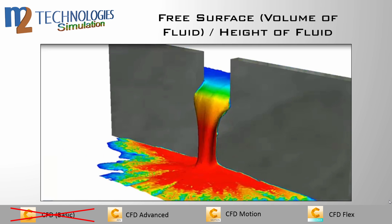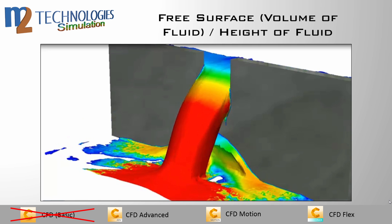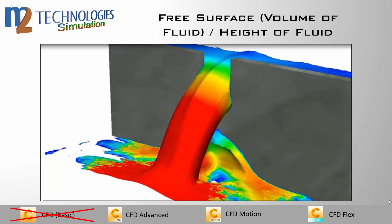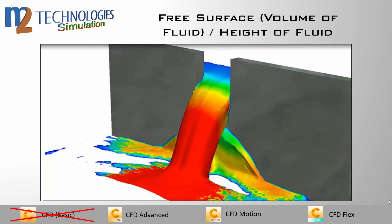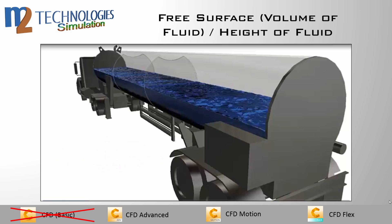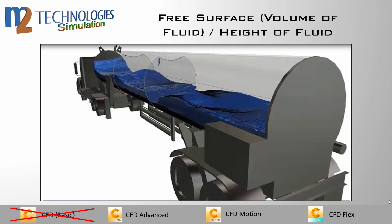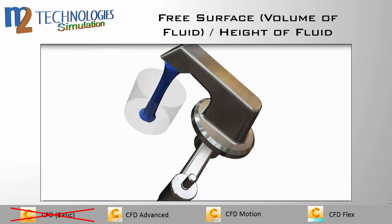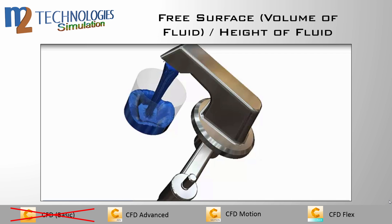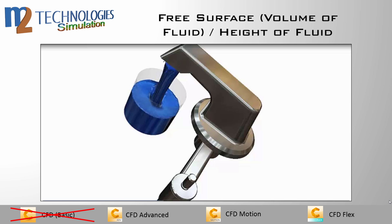With the free surface modeling capability, you can dynamically simulate the interface between liquids and solids. This ability is essential for modeling flow phenomena such as waves, sloshing, and spilling — flows that occur in nature as well as in a wide range of engineering applications. I'll just let this video play out because this stuff looks really cool.